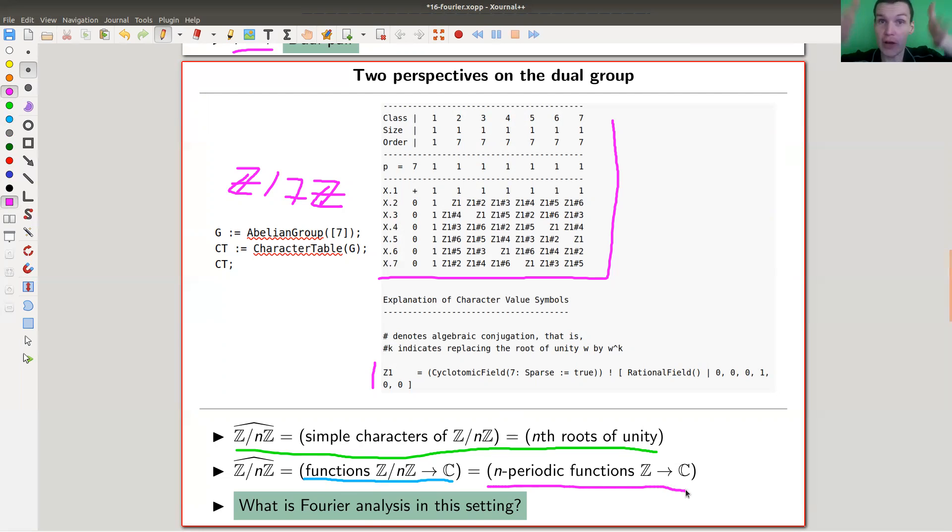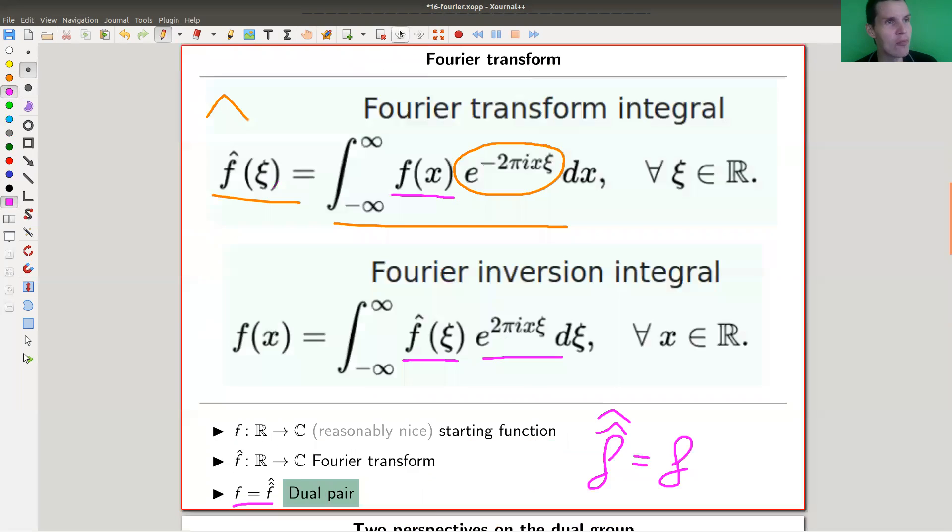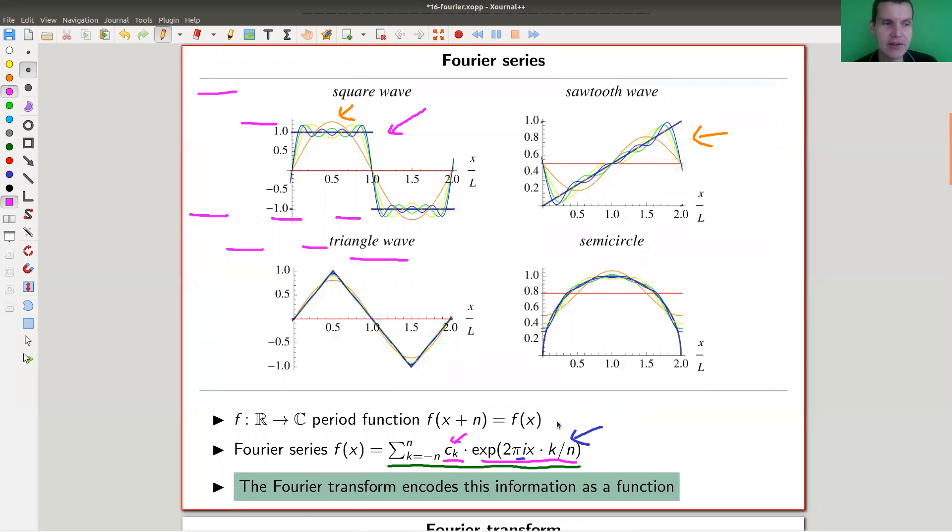So Z to the n just cuts out a piece of length n and it just repeats itself. It's just a different disguise of a periodic function. Now you might think, hmm wait - what's the whole point here of Fourier series to approximate periodic functions by standard periodic functions?